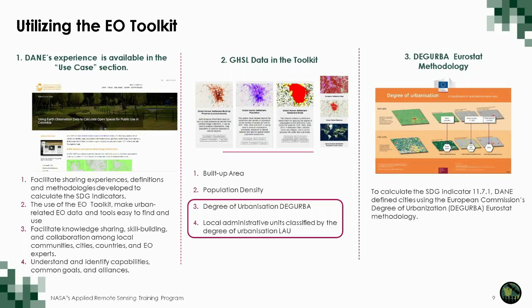We also use the Global Human Settlement Layer, a free layer that provides information about built-up area, population density, and also the degree of urbanization — the DEGURBA — and local administrative units classified by degree of urbanization. This global layer is available and could be a source of information for this indicator. We also take into account the DEGURBA methodology from Eurostat.